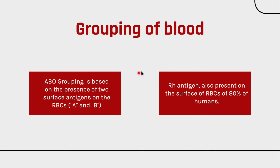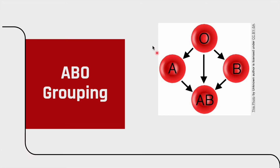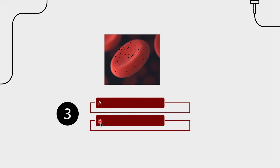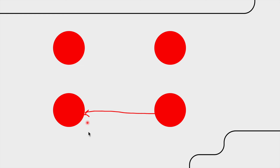So let's look at the grouping of blood first. There are two types: ABO grouping and Rh grouping. Let's go with ABO grouping first. When you look at an RBC, in reality there are three types of antigen: A, B, and Rh. We are going to learn about Rh later in this video, so we don't have to worry about that right now.